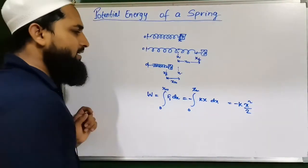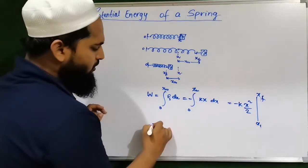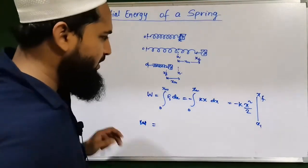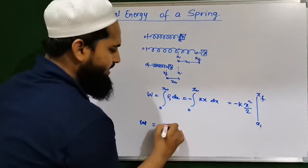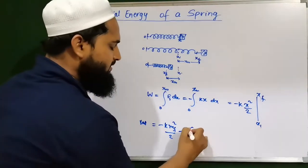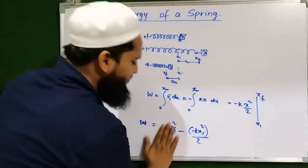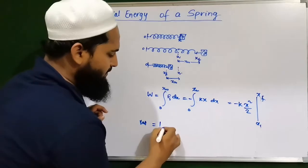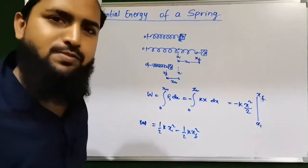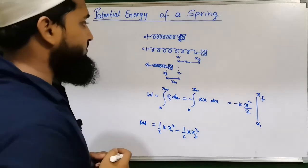So the work is minus kx² divided by two. Integrating from zero to X_M, we write the potential energy at the final position as minus half k x_f squared, minus the potential energy at the initial position minus half k x_i squared. So the work done by the spring is one-half k x_initial squared minus one-half k x_final squared.